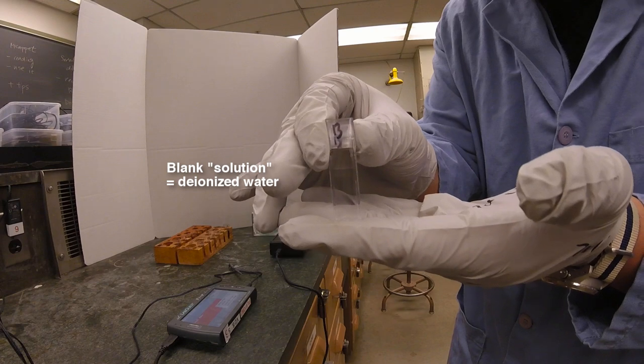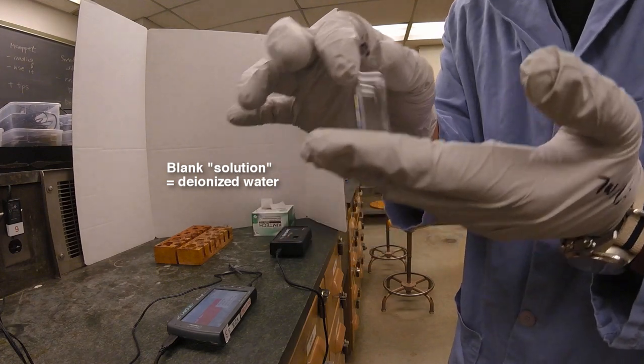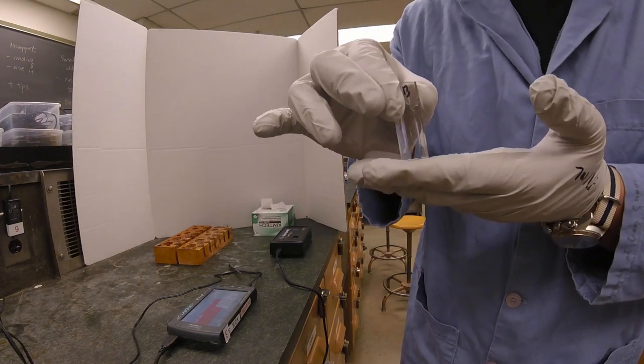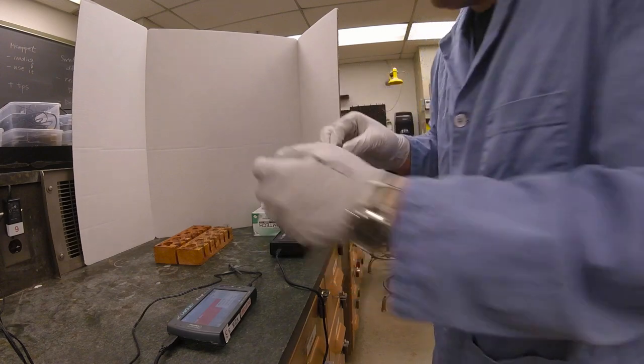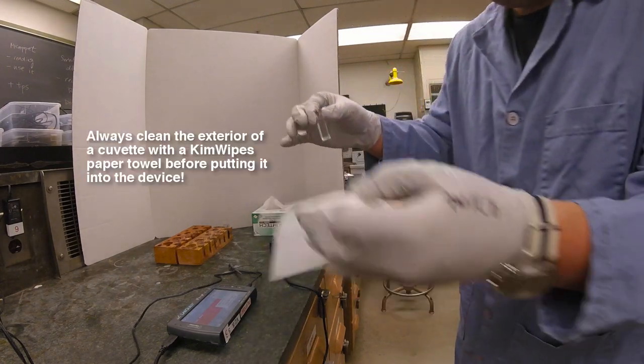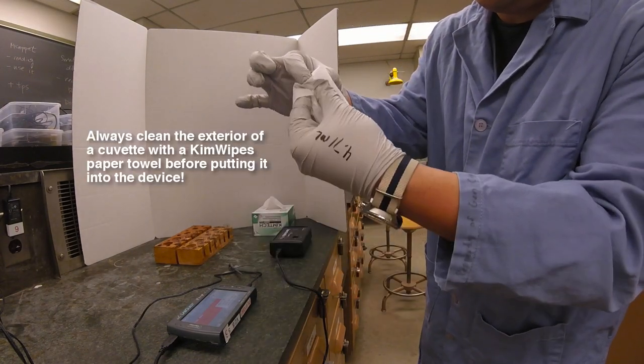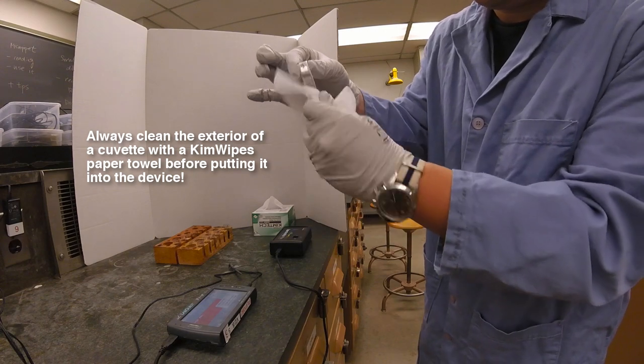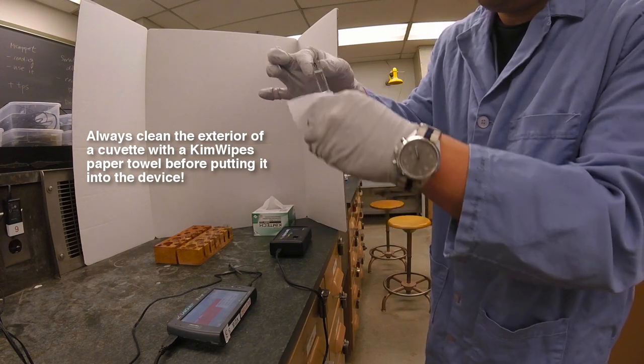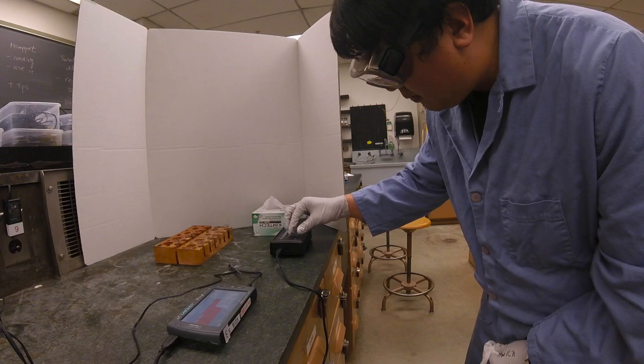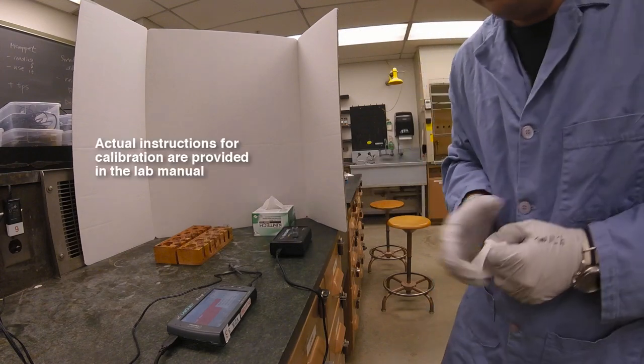The blank is a cuvette marked with B. Before putting any cuvette into the spectrophotometer device, you want to wipe it to make sure there aren't any interferences with the light source. Now I'm going to calibrate it.